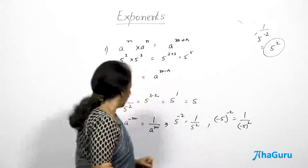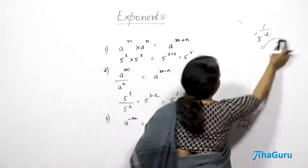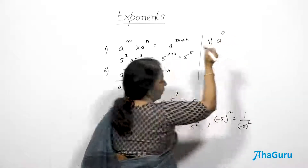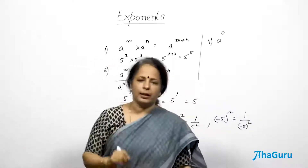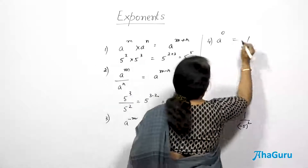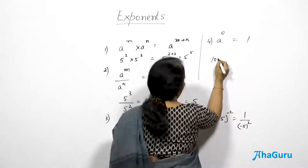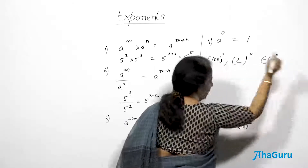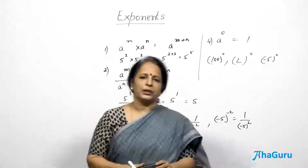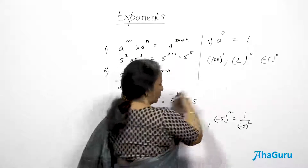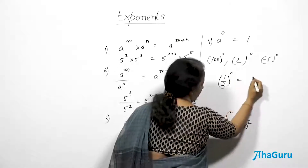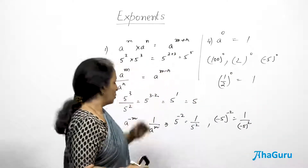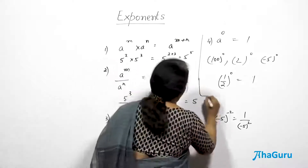The fourth law: any number raised to the power 0 equals 1. Whatever the base, as long as the power is 0, the answer is 1. So 100^0 = 1, 2^0 = 1, (−5)^0 = 1. Even if the base is a fraction — say (1/2)^0 — the answer is still 1. As long as the power is 0, the answer is 1.